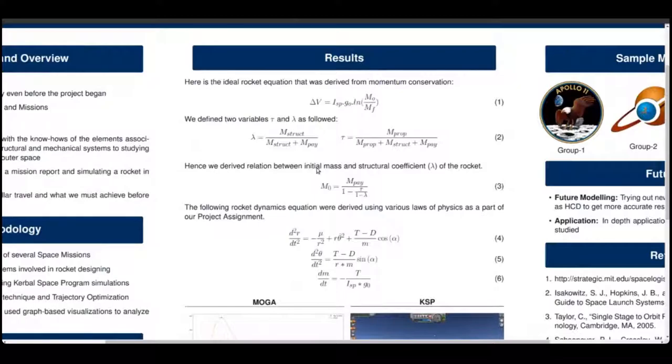Coming to a very important section results. We derived the famous rocket equation from simple momentum conservation. Consequently, we got the delta V equation that relates to the specific impulse.